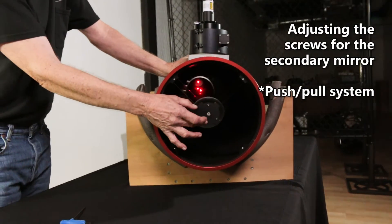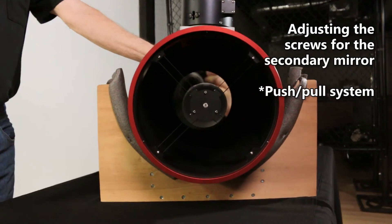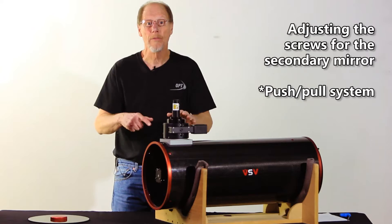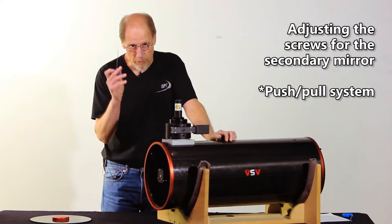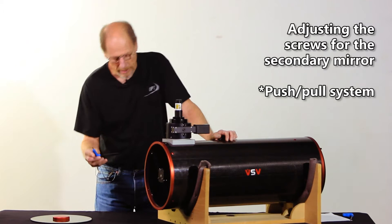The secondary is held in by three screws. It's a push-pull system, so there's always got to be a give-and-take. You're going to tighten one side, you have to loosen the other two. It usually always takes two adjustments to center the laser.